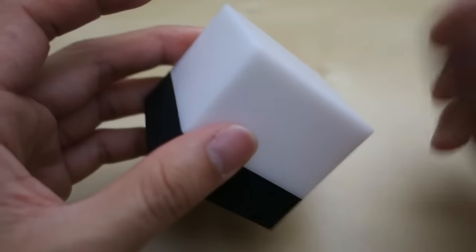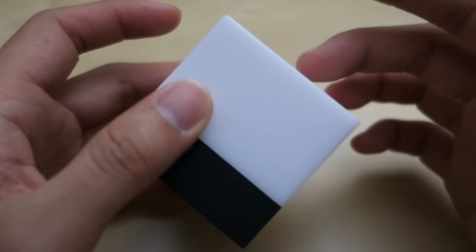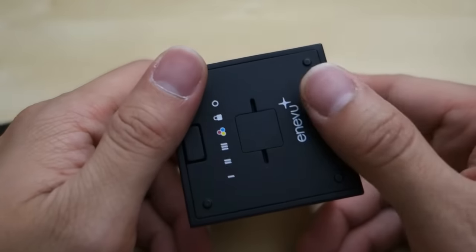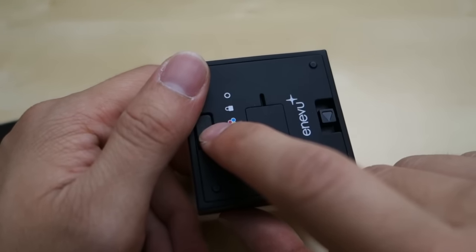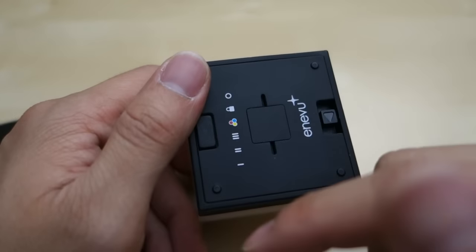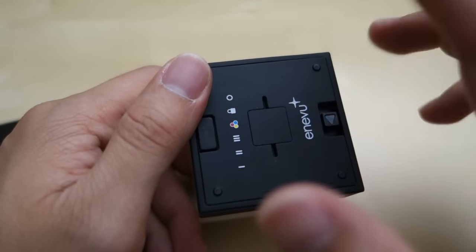This device is pretty easy to use. You have just a little translucent area here where the light will light up. At the bottom you have a button that will change to different modes. You single click to basically go to the next mode, double click to go to previous mode. You can hold down for about five seconds to get to the emergency mode.